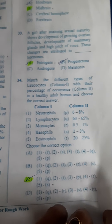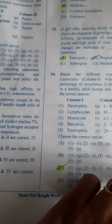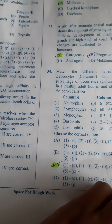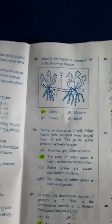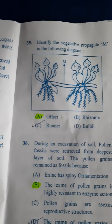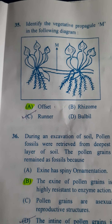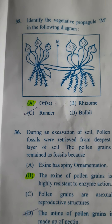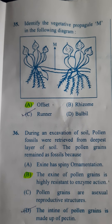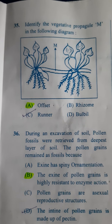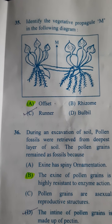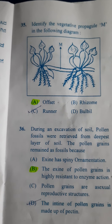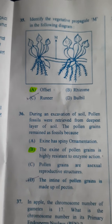Next question: Check the diagram — identify the correct vegetative propagule in the following diagram. This is the diagram of Eichhornia, and here M refers to offset, which is used for vegetative propagation. Answer is A.